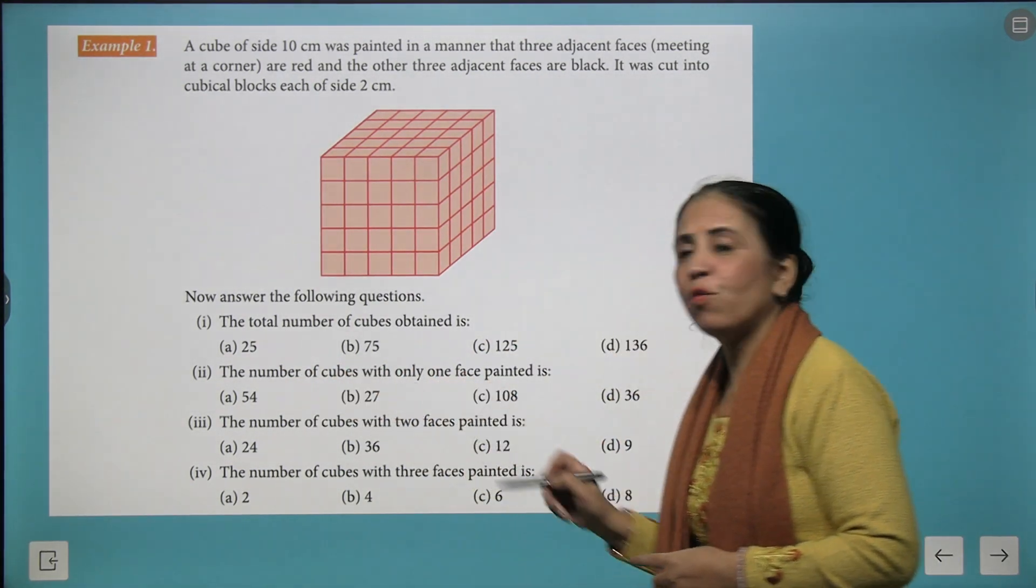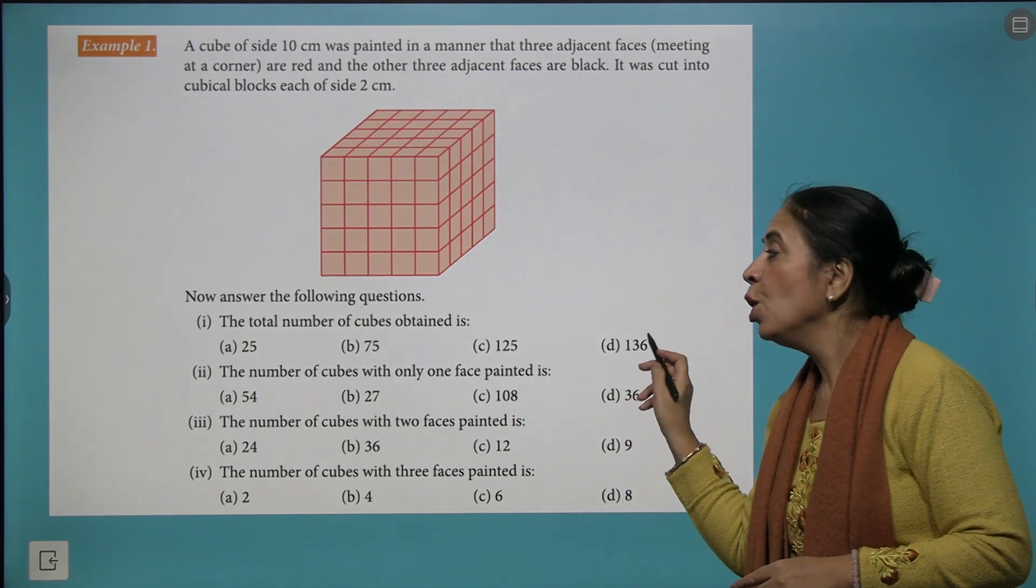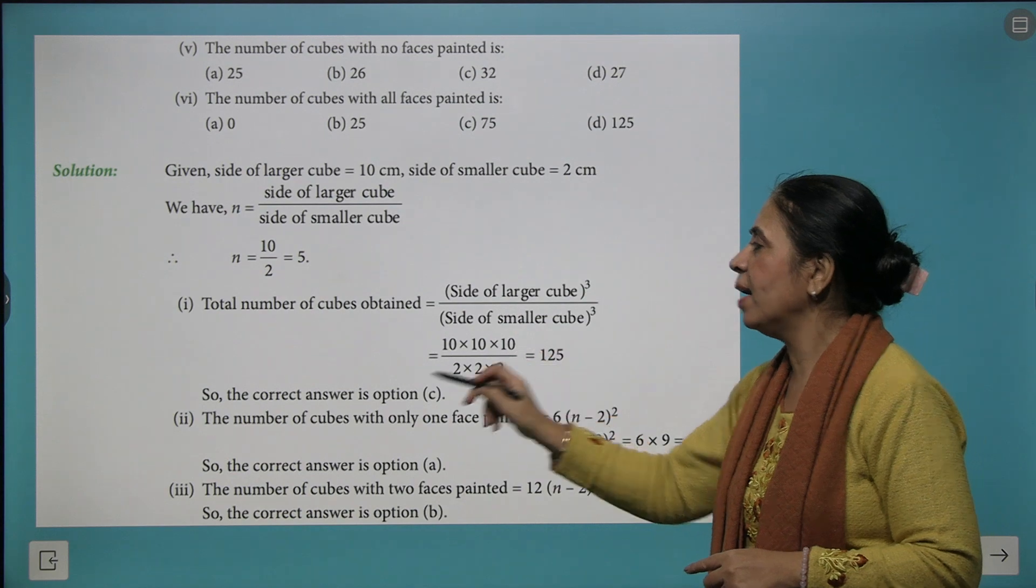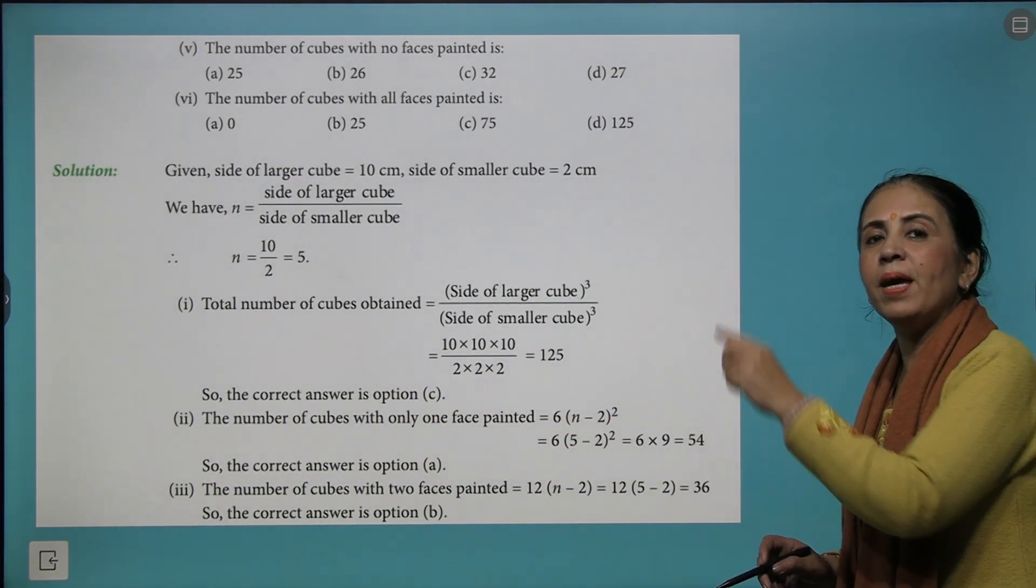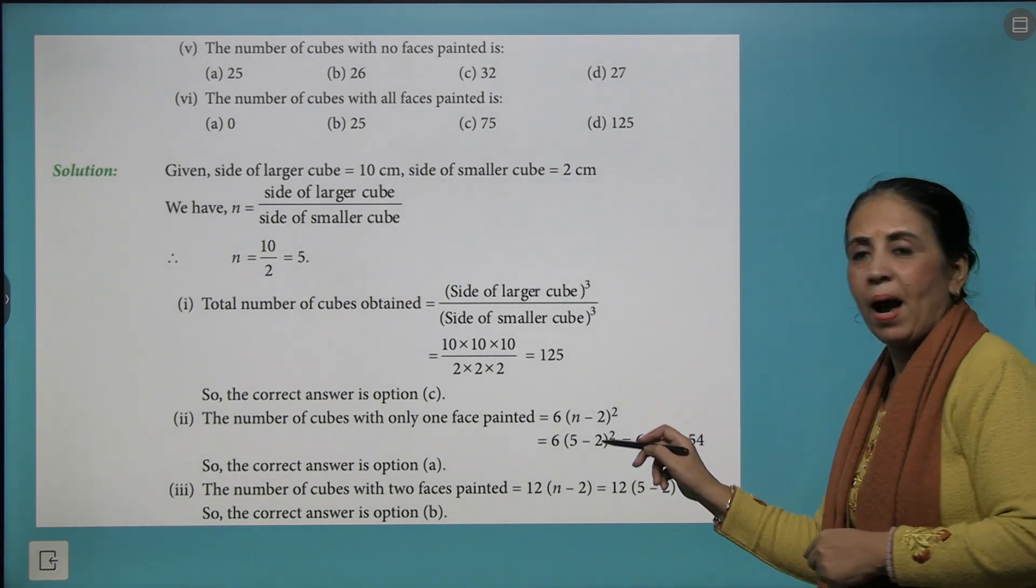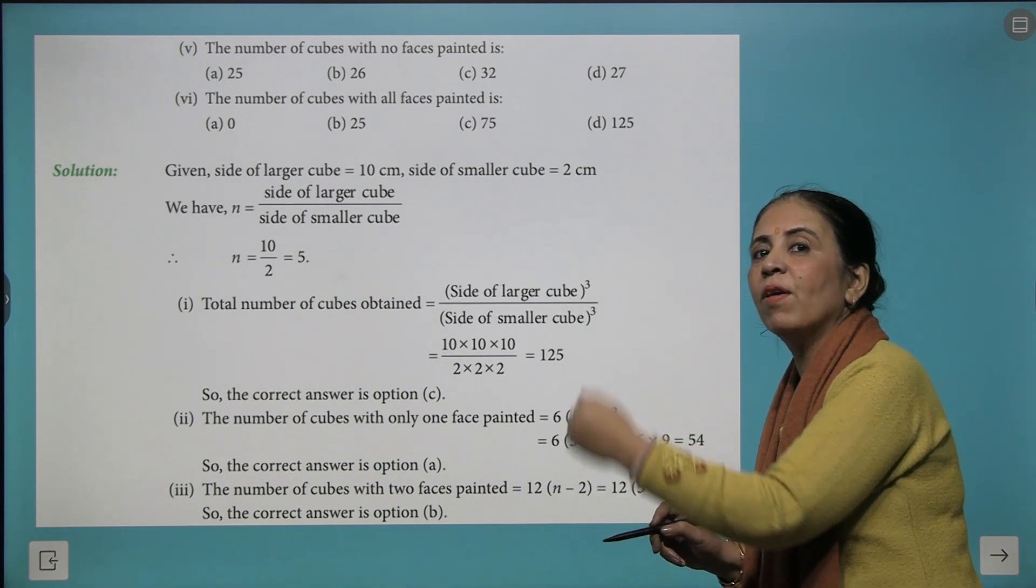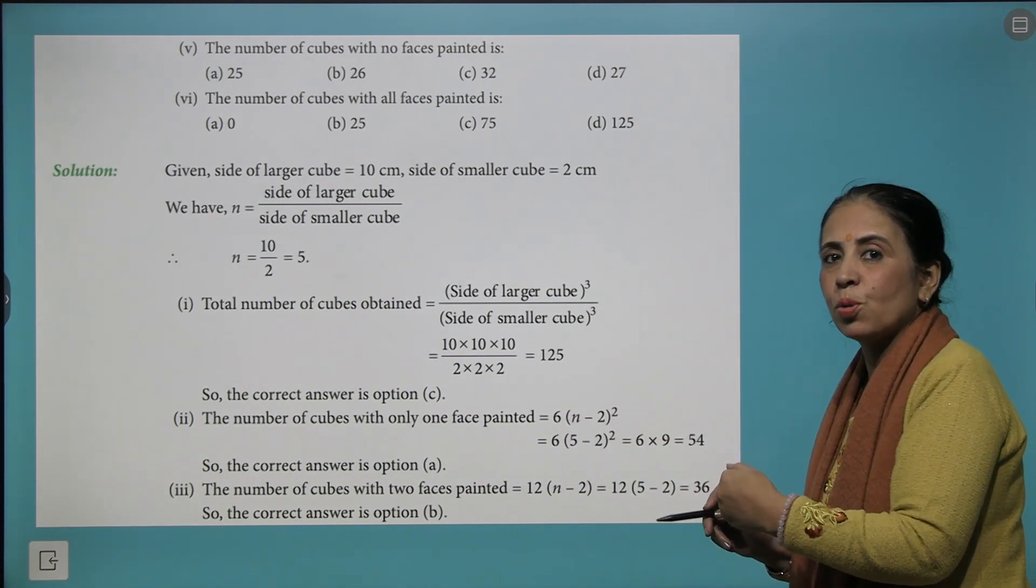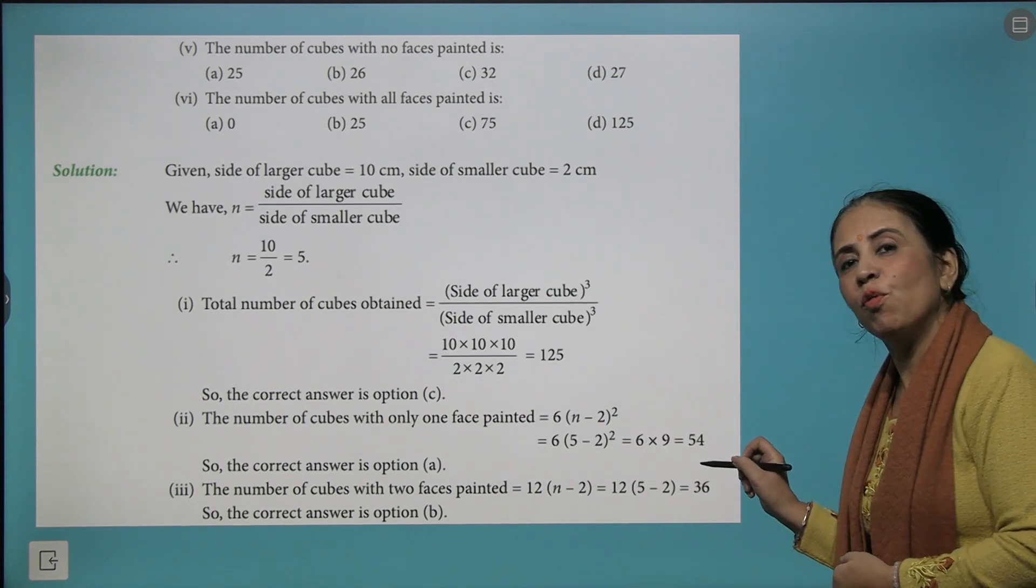Coming to the next one, the number of cubes with only one face painted. You remember the rule we started, that's the number of 1 face painted will be 6 times n minus 2 squared. So here we have already calculated n as 5, 5 minus 2 is 3, 3 squared is 9 and 9 times 6 gives you 54.